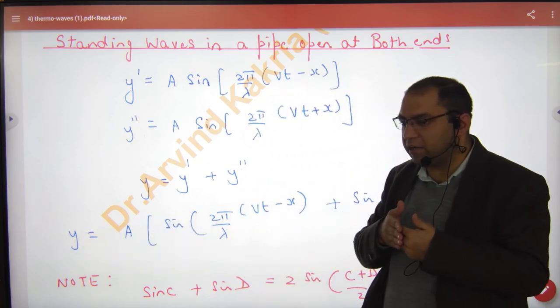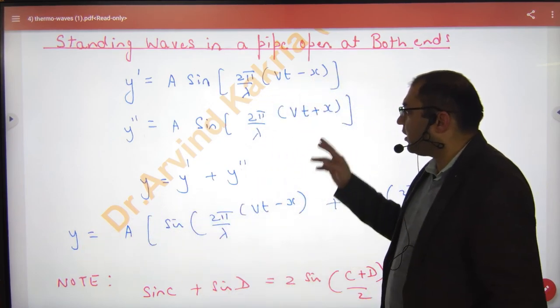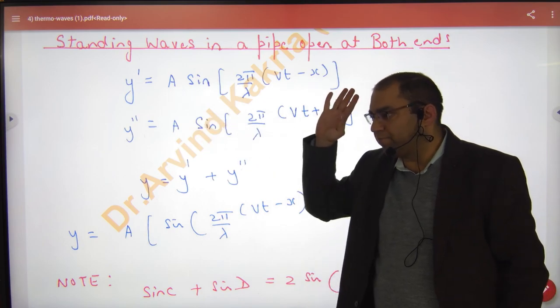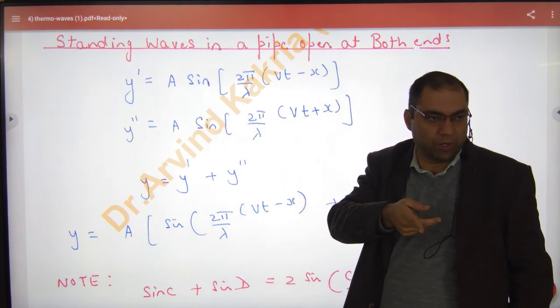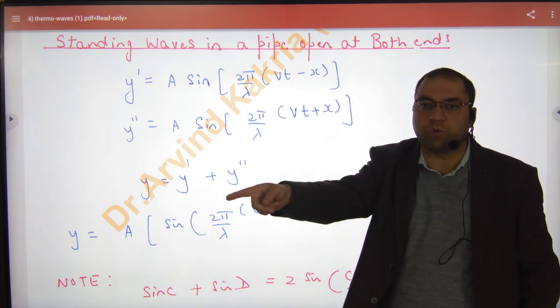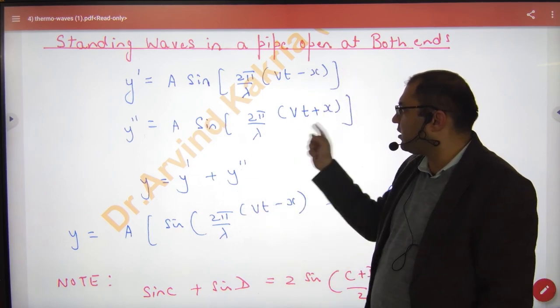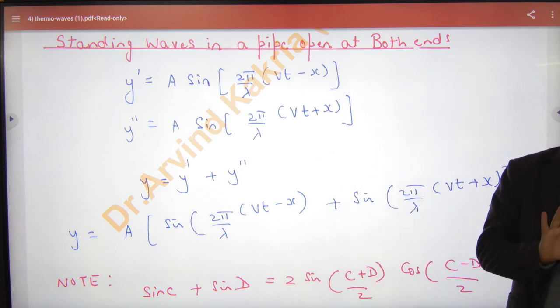So as the particle came, the wave will reflect again. So it will not be Y negative, because at fixed end Y was negative. It will not be negative, but because the direction has changed, Vt will be minus X, Vt will be plus X. Clear here?